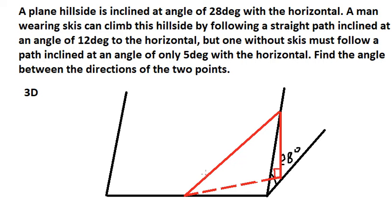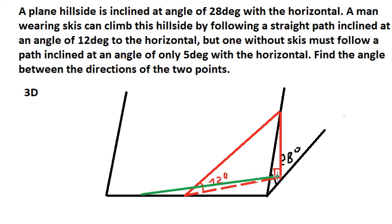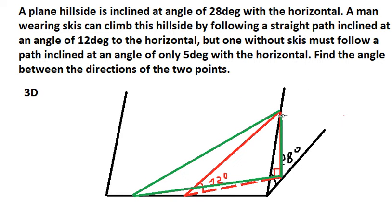The angle between the red line and this line here is about 12 degrees to the horizontal. The person without skis will go along the green line. The angle between the red line and the green line — between this line and this line — is about 5 degrees. The question wants us to find this blue angle.